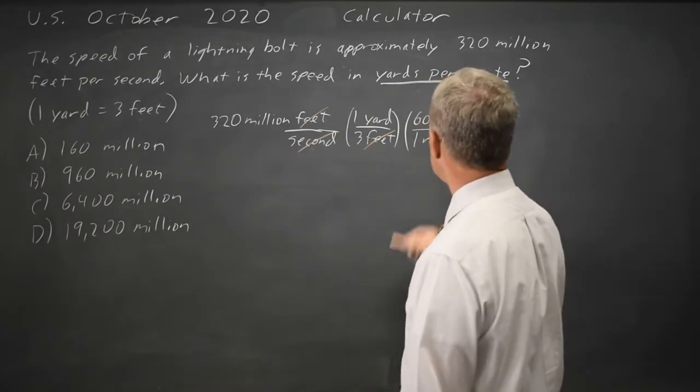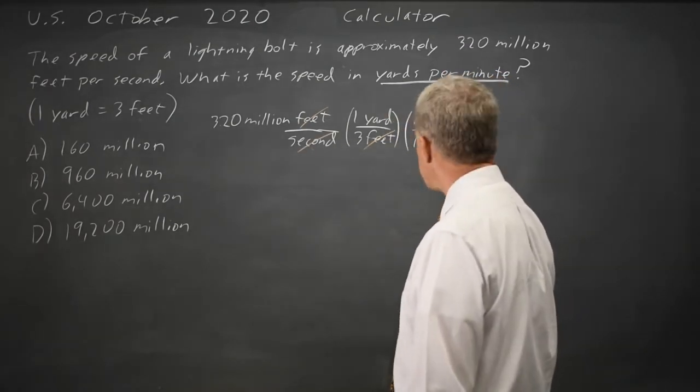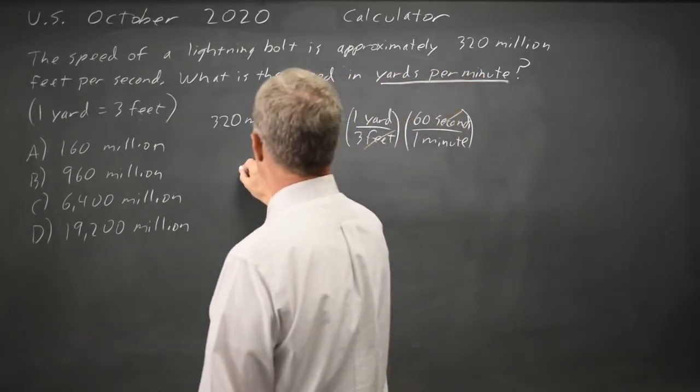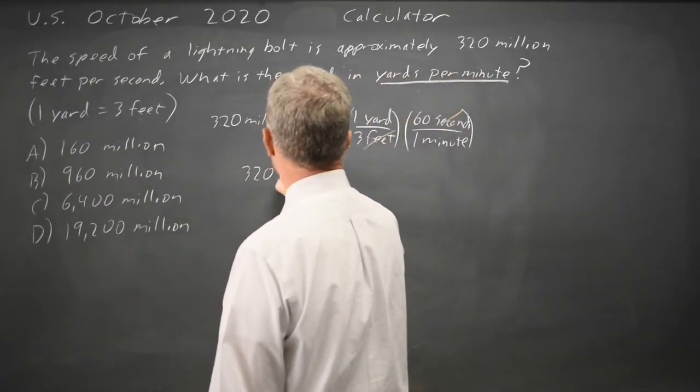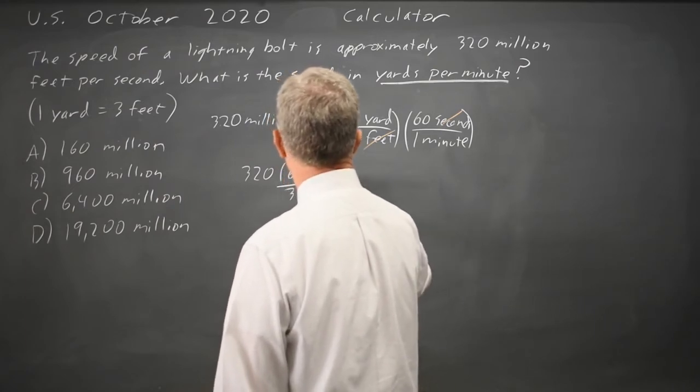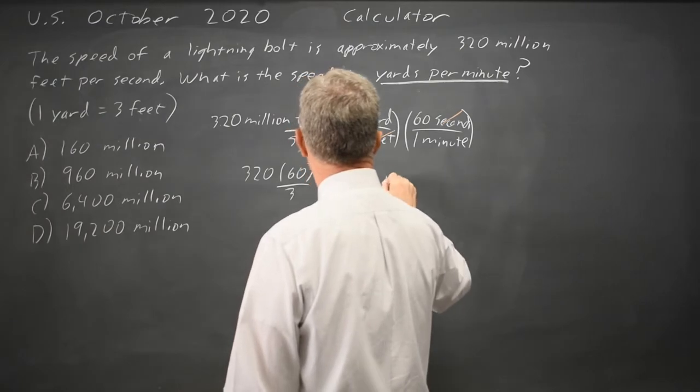The seconds cancel and I'm left with yards per minute which is the units they asked for, yards per minute. So that would be 320 times 60 over 3 in units of yards over minutes or yards per minute.